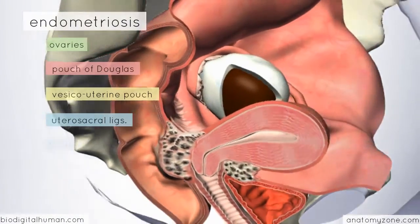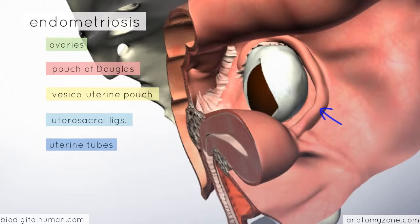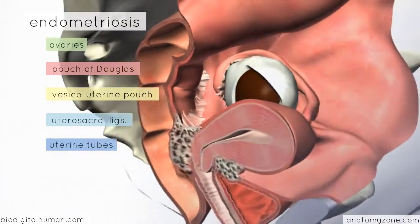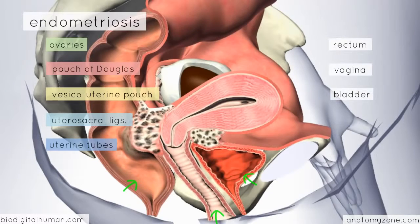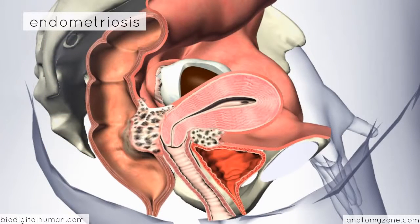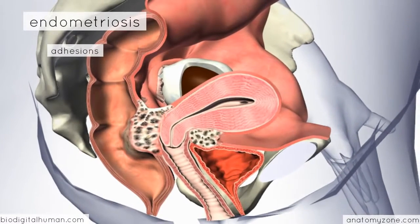Endometriosis isn't confined only to the pelvic cavity — it also affects the umbilicus, wound scars, the pleura, the pericardium, and even the central nervous system. Other pelvic sites include the rectum, vagina, and bladder. This ectopic endometrial tissue is oestrogen-sensitive, just like normal endometrium, and increases and decreases in size according to the hormonal stage of the menstrual cycle. It regresses after the menopause and during pregnancy. Long term, endometriosis can cause adhesions between the pelvic viscera, leading to fibrosis and ultimately immobilisation of the pelvic organs.